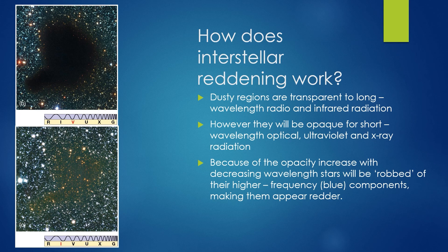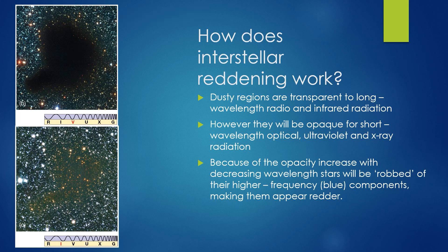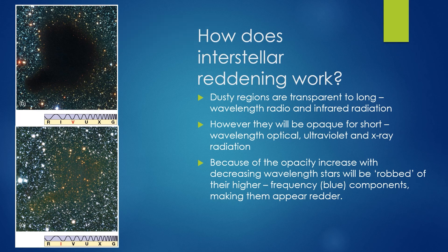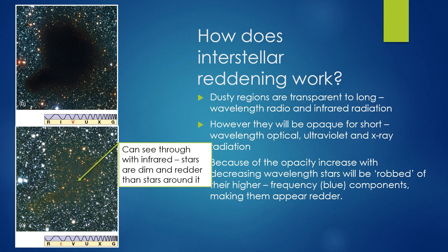The example we have here is Barnard 68. It is opaque to optical wavelengths, so starlight does not pass through it. But near the edges there is less cloud matter, which allows some light to get through — and as we can see, it's redder near the edges and looks almost like fog. You can observe that stars near the cloud are dimmer than the surrounding stars and appear redder. If we look at the cloud with infrared light, it does come through, and again the stars are observably dimmer and much, much redder.